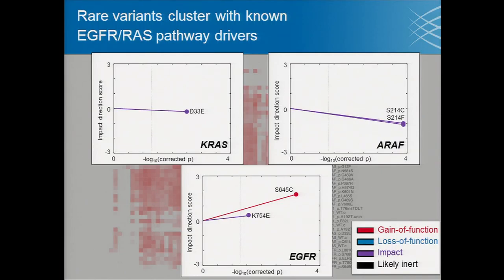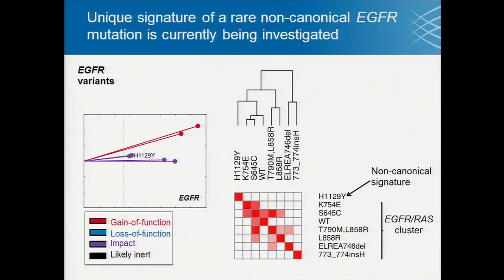Not all rare mutations in these genes clustered in this pathway. For EGFR, there was one mutation, H1129Y, that was also predicted to have a functional impact but was not clustering with the rest of the mutations. We are currently investigating what this unique signature represents.